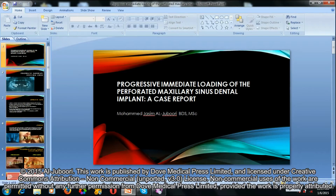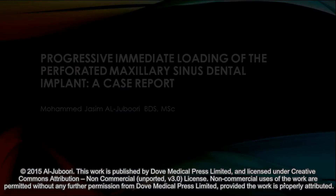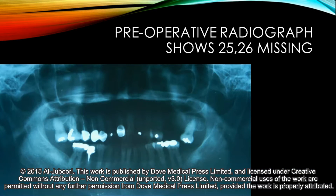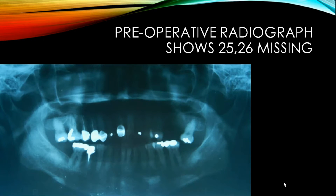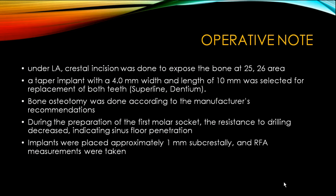Hope it will be beneficial to you. So let's start with the patient history. The patient attended our clinic; she was complaining of missing teeth 2.5 and 2.6, and the implant was proposed to the patient. Operative note: under local anesthesia, crestal incision was done to expose the bone at the 2.5 and 2.6 area.